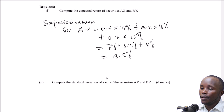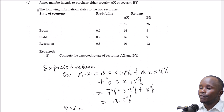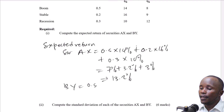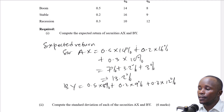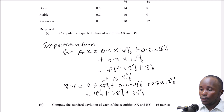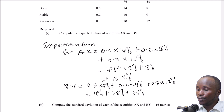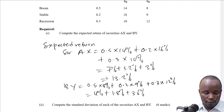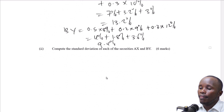For BY: 0.5 × 8% + 0.2 × 9% + 0.3 × 12%. That gives: 0.5 × 8 = 4%, 0.2 × 9 = 1.8%, 0.3 × 12 = 3.6%. Total: 4 + 1.8 + 3.6 = 9.4%. The expected return for BY is 9.4%.